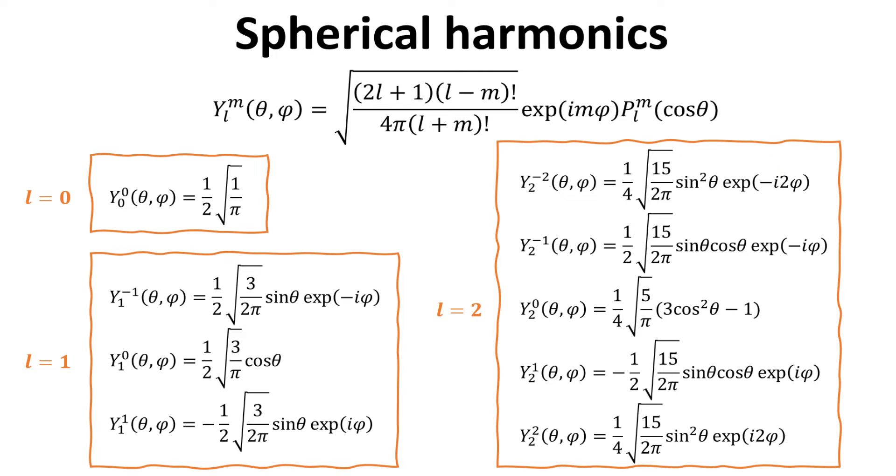Thus, 1 spherical harmonic for L equals 0, 3 spherical harmonics for L equals 1, and 5 spherical harmonics for L equals 2. We see that these spherical harmonics are complex functions due to the complex exponential functions.